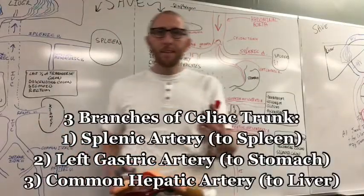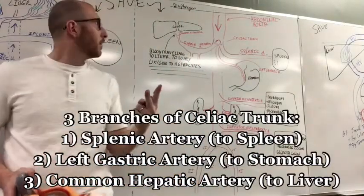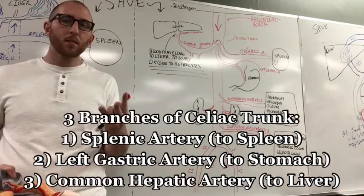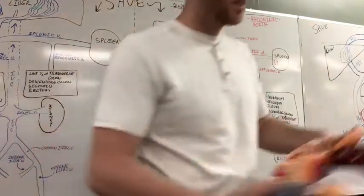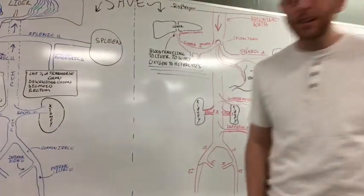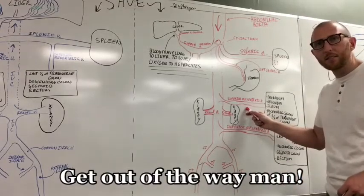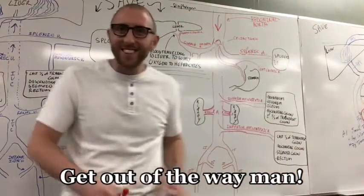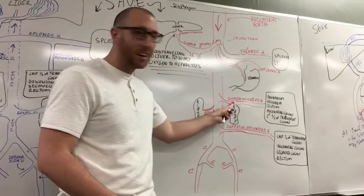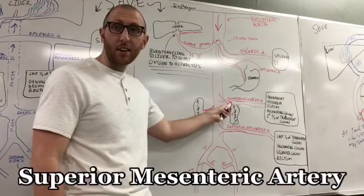Great. We hit the spleen. We hit the stomach. We hit the liver. Now let's hit the intestines. And with the intestines, I'm coming down here. We hop to the other side there. I'm coming down here to the superior mesenteric artery.